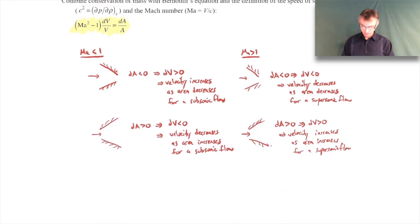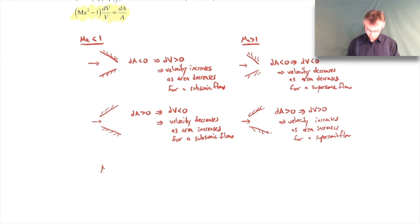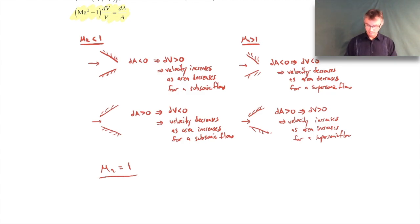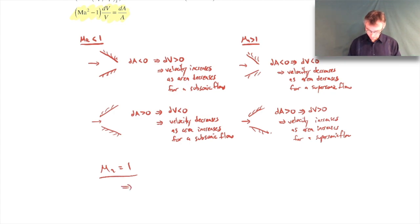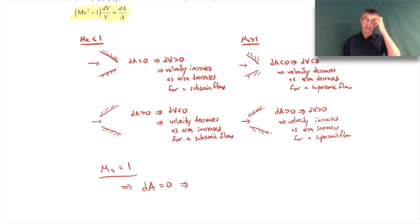Now let me talk about one other special case: what happens when the Mach number is one? When M = 1, you'll see the left-hand side is zero, which means the right-hand side must also be zero. So dA must be zero - it's a point of inflection where the area isn't changing. Sonic conditions must occur where the area is not changing.